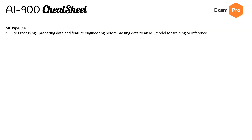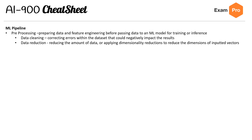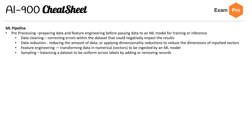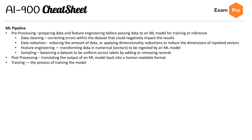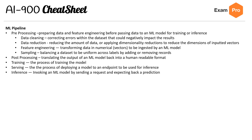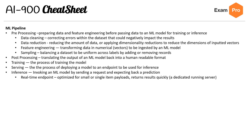On to the second sheet for ML pipeline. Preprocessing — preparing data and feature engineering before passing data to an ML model — includes data cleaning (correcting errors within the dataset), data reduction (reducing data or applying dimensionality reduction), feature engineering (transforming data into numerical vectors), and sampling or resampling (balancing a dataset to be uniform across labels). Post-processing translates the output of an ML model back into human-readable format. Training is the process of training the model. Serving is deploying the model to an endpoint for inference. Inference is invoking an ML model by sending requests and expecting back a prediction. Real-time endpoints are optimized for small or single-item payloads and return results quickly using a dedicated running server. Batch transform is optimized for larger batch predictions, where the server runs only for the duration of the batch.